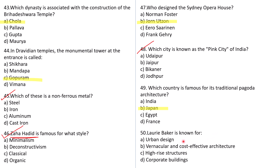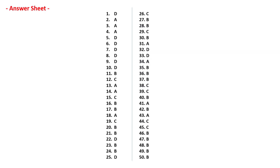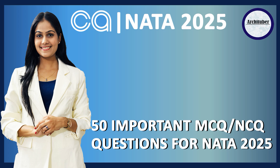Question number 50: Laurie Baker is known for urban design, vernacular and cost-effective architecture, high-rise structures, or corporate buildings? He is known for his vernacular style and cost-effective architecture. Do let me know if you want more such videos or a mock test — type 'mock test' in the comments. Now that you've reached the end of this video, we have answer sheets for all of the questions. With that we have discussed 50 questions. Please like, comment, share and subscribe. I will see you in the next video — take care, bye!